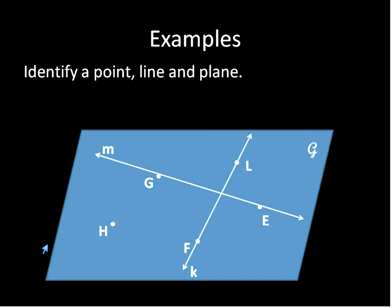And the plane that is represented by this blue parallelogram, we can say it is plane G, script letter G. That's a capital G in the script. Or you could label it using any of the points. This is plane G, H, F, L, G, F, L, E, F, L, E, G, any of those points that are on there. If you name three of them in order, that would be another way to label this plane.